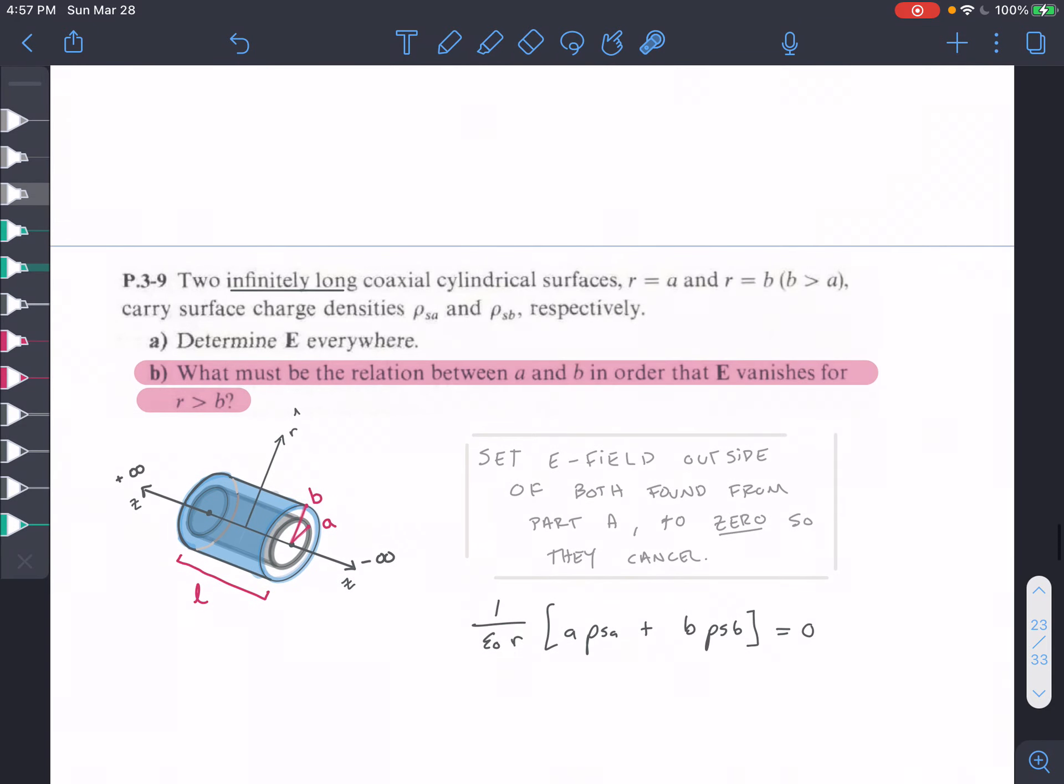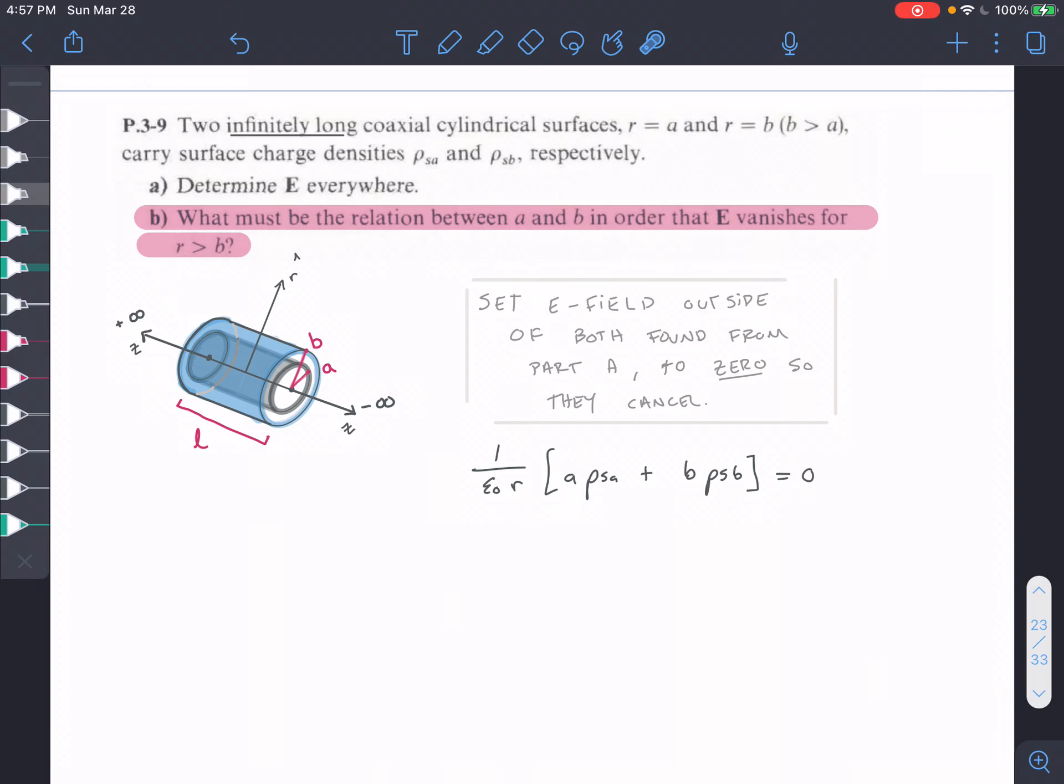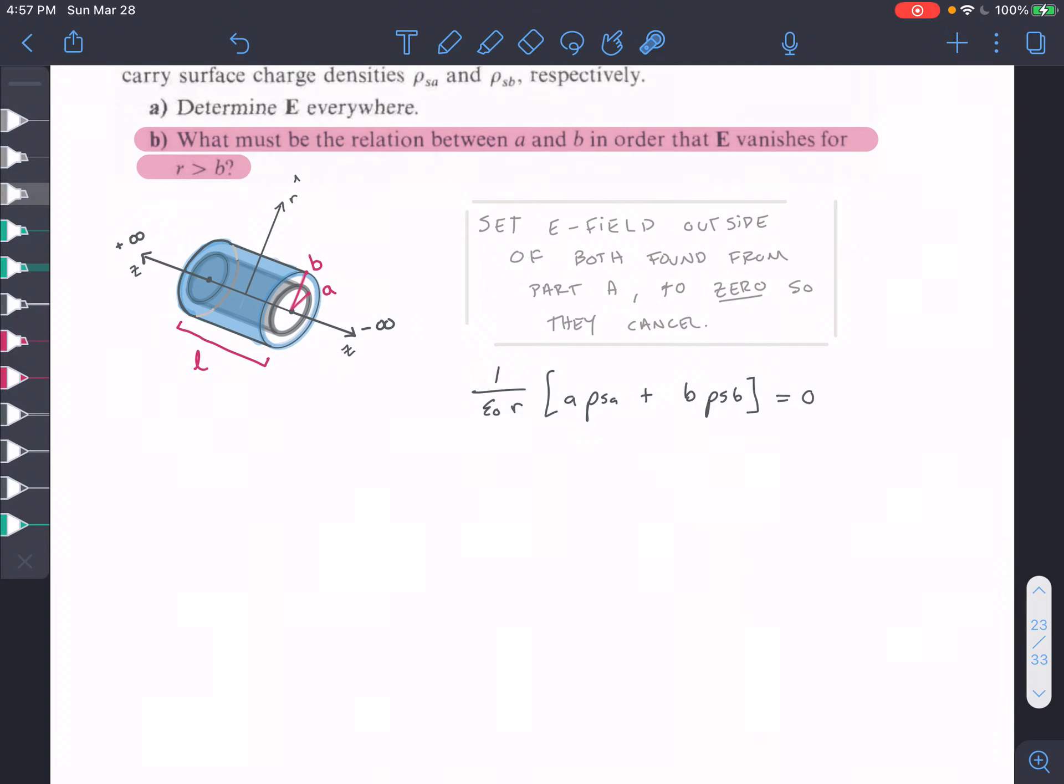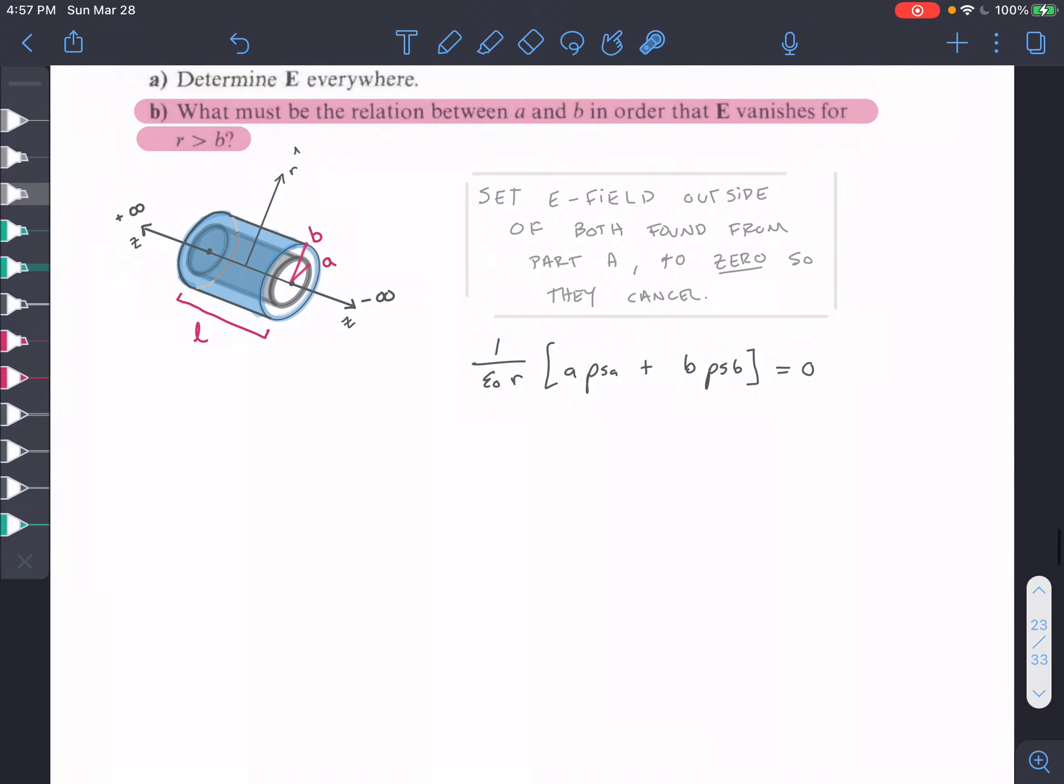So in order to figure out the relationship that makes E vanish, we're going to have to set the expression that we got from part A to 0, and then solve for a ratio of A and B. So let's go ahead and do that.